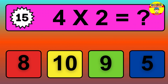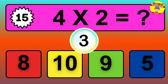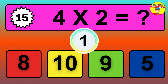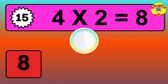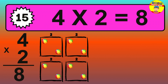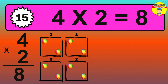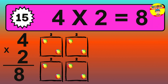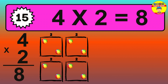Question 15. 4 times 2 equals what? The answer is 4 times 2 is 8. To calculate, we have 4 groups with 2 balls each one. So, how many balls do we have? 8 balls.